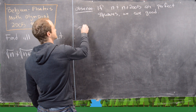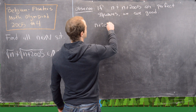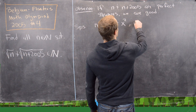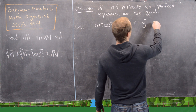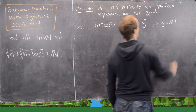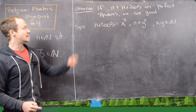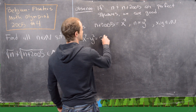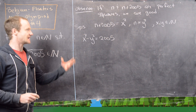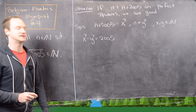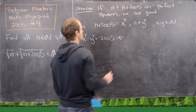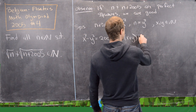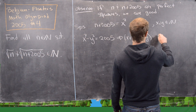Suppose that n + 2005 = x² and n = y², where x and y are both natural numbers. That allows us to write x² - y² = 2005, because if you subtract n from n + 2005 you obviously get 2005. We can factor this as (x + y)(x - y) = 2005.